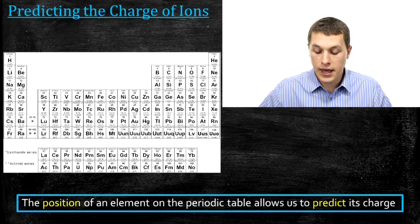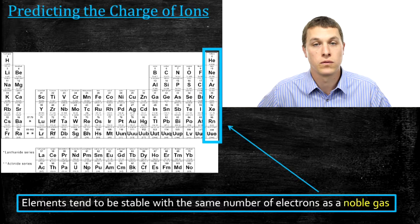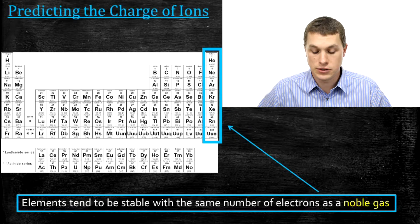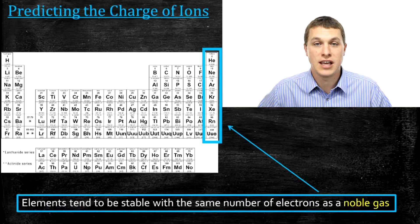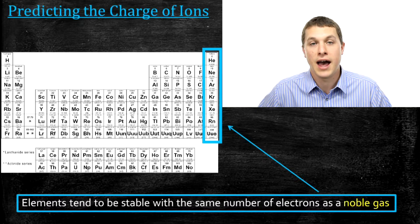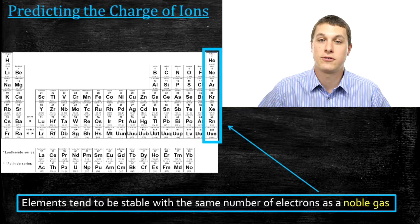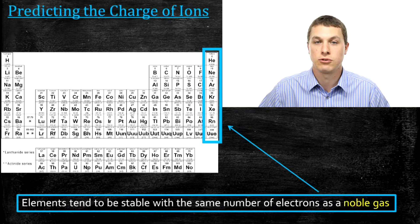How does that work? Well, it turns out that elements tend to want to have the same number of electrons as a noble gas. Noble gases are just those elements in the far right column of the periodic table — helium, neon, argon — and those are really stable. Their stability is due in part to the number of electrons they have around the atoms, so other elements tend to gain or lose electrons until they have the same number as a noble gas. That's the fact we're going to use to think about what charges different ions will have.